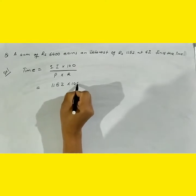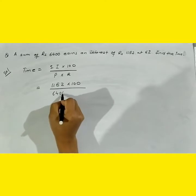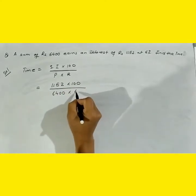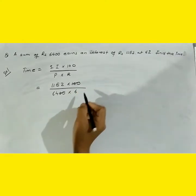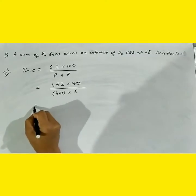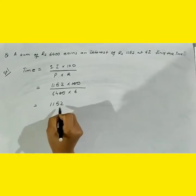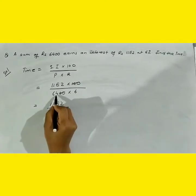Times 100. Principle is 6400, and rate is 6 percent. You can cancel 100 with 6400 to get 64. Then what we get is 1152 divided by 64 times 6.